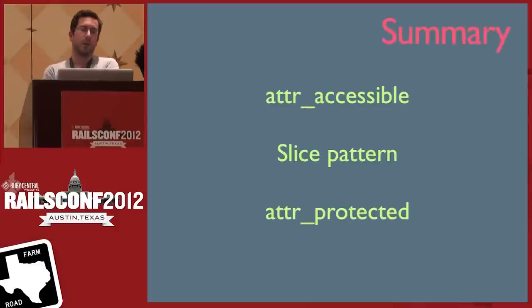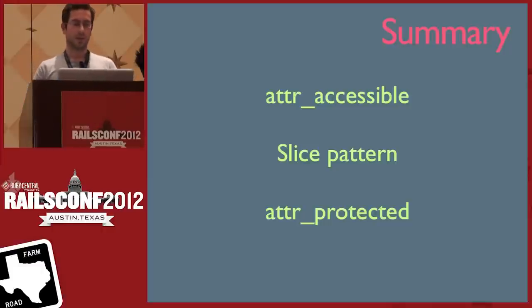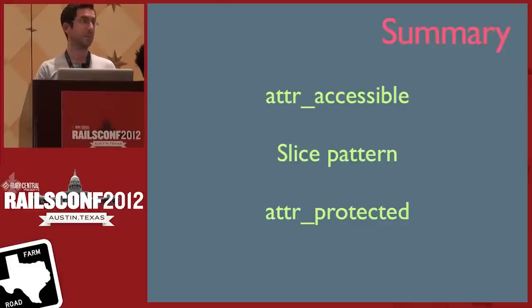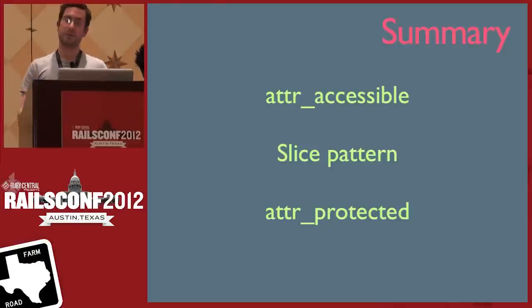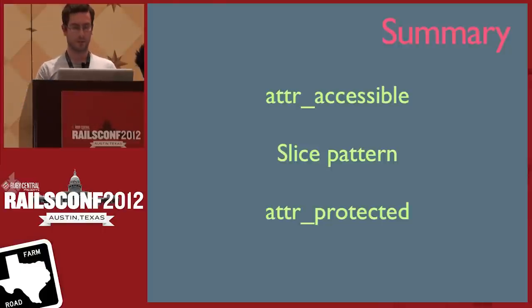Mass assignment summary: use attr_accessible — the whitelist approach — as the most common method. Potentially look at the slice pattern to move the logic from the model to the controller. attr_protected is better than nothing but probably the last resort.